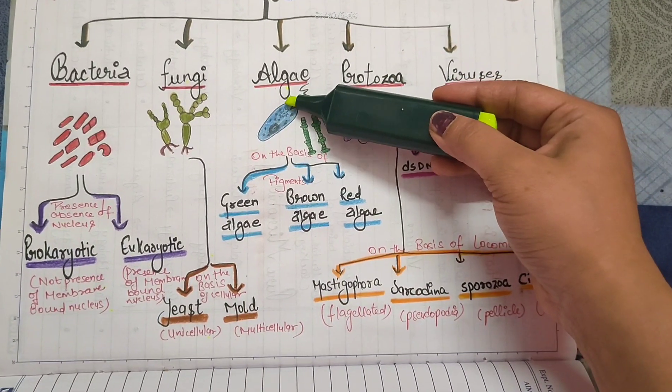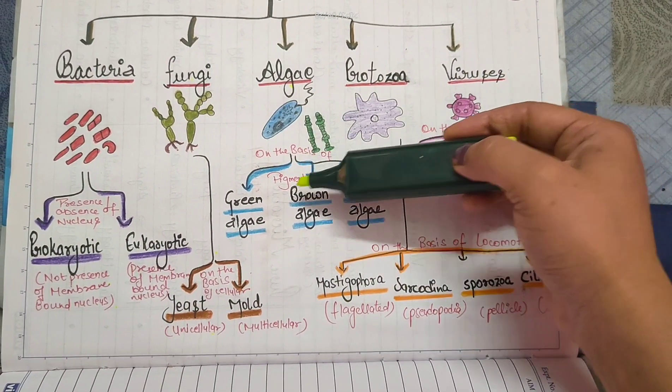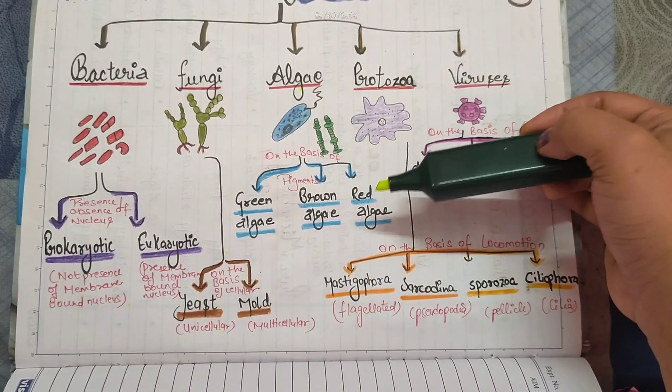Algae are classified on the basis of pigments: green algae, brown algae, and red algae.